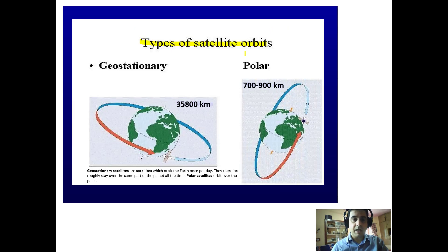We have another classification based on satellite orbits — how they revolve around the earth. Geostationary satellites are placed at an altitude of 35,800 kilometers. They are equatorial and orbit the earth once per day, therefore roughly staying over the same part of the planet.